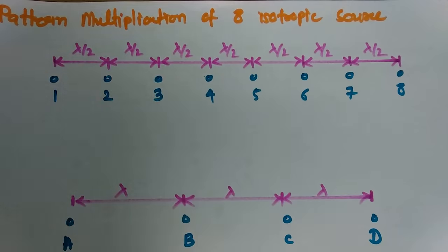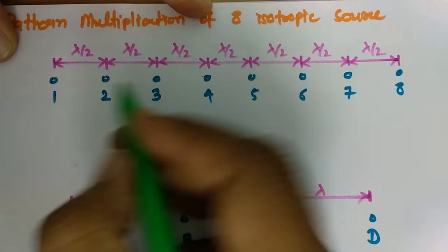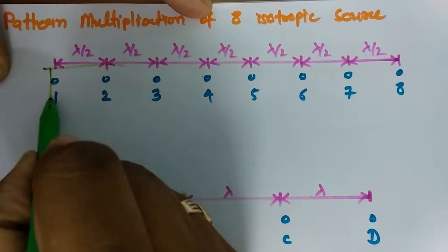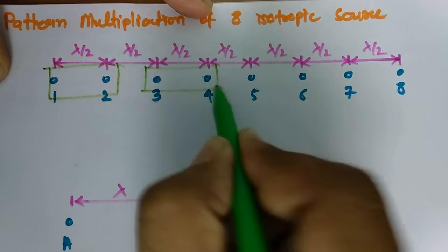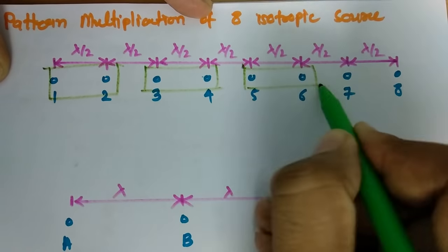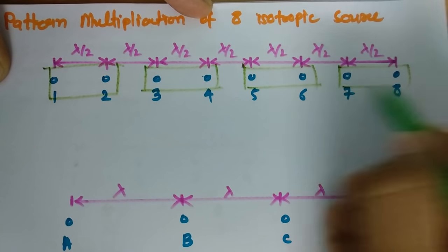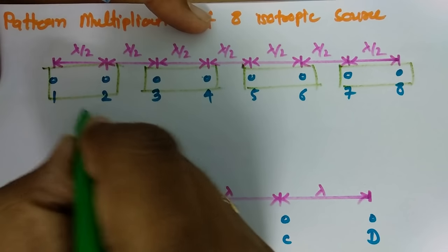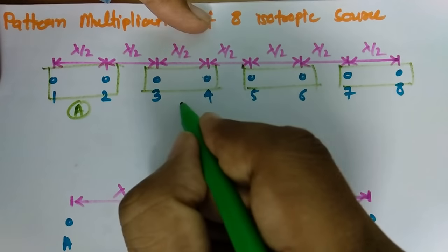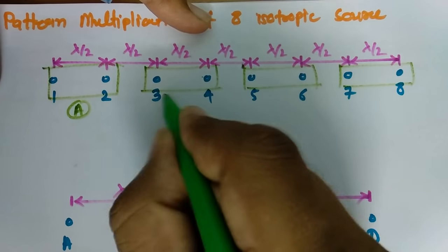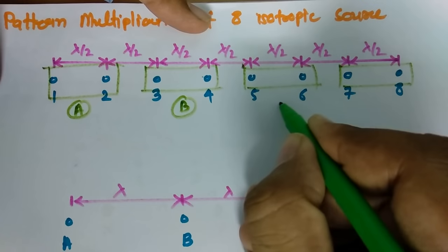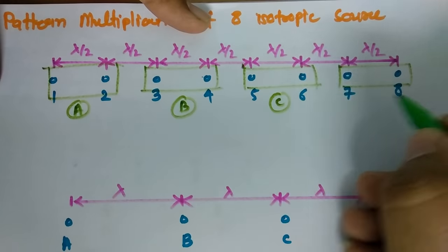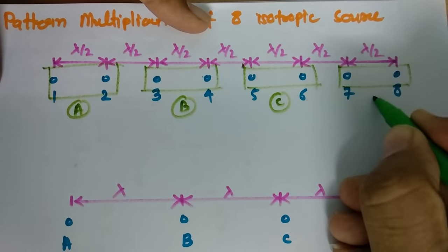I'll be considering groups of elements. First I'll be considering group of 1 and 2, group of 3 and 4, group of 5 and 6, group of 7 and 8. Let us consider 1 and 2 group as A, 3 and 4 group as B, 5 and 6 group as C, and 7 and 8 group as D.